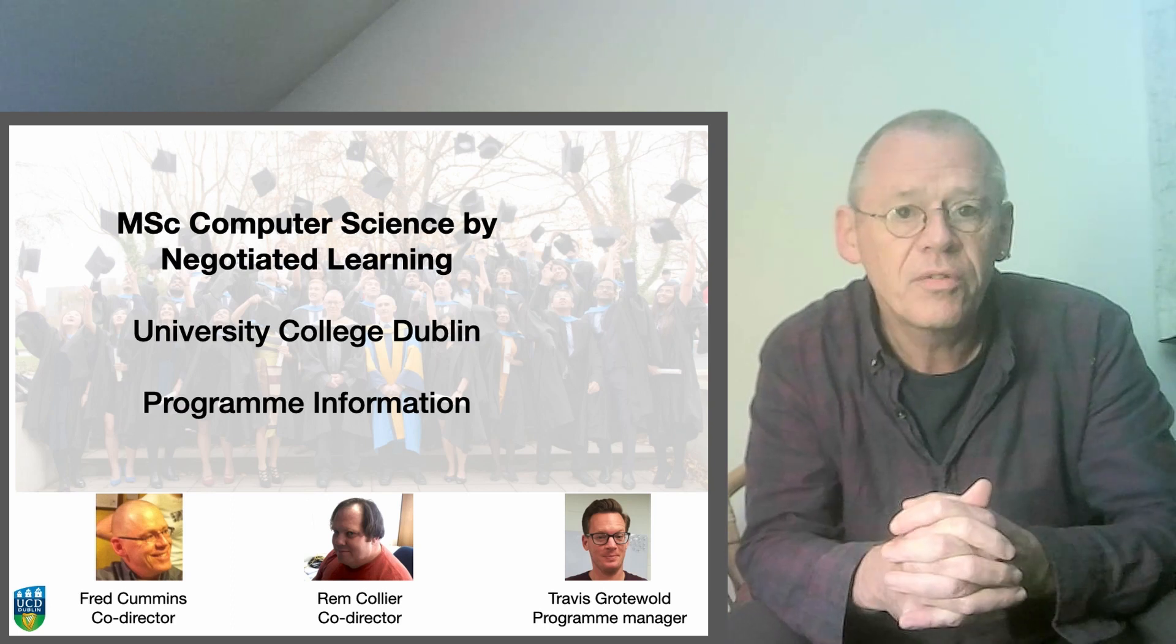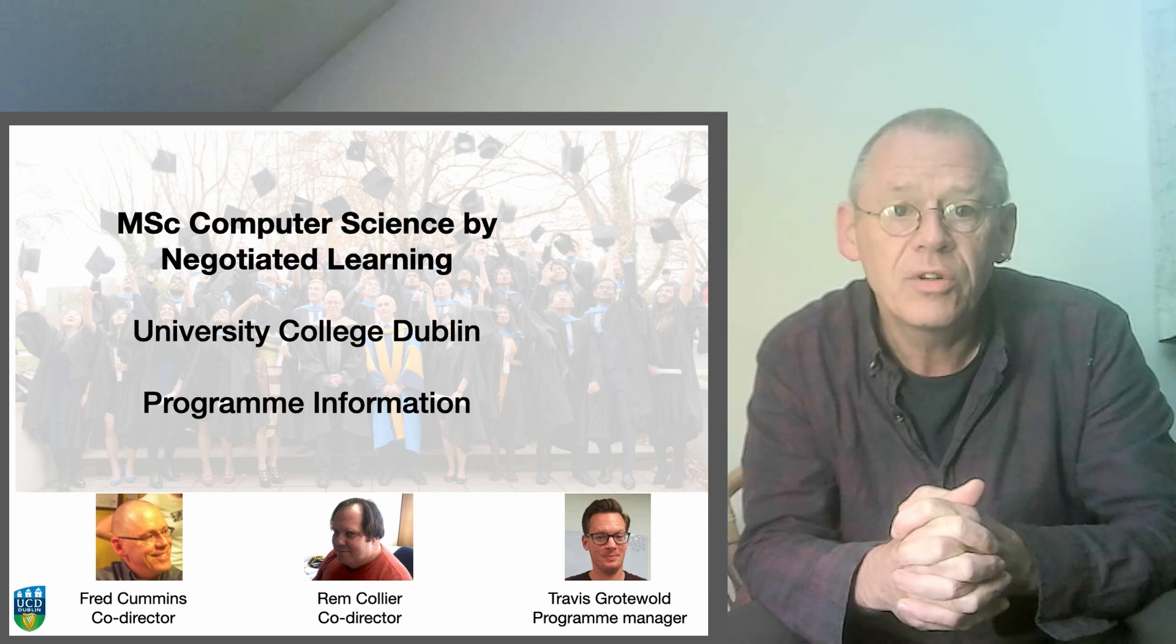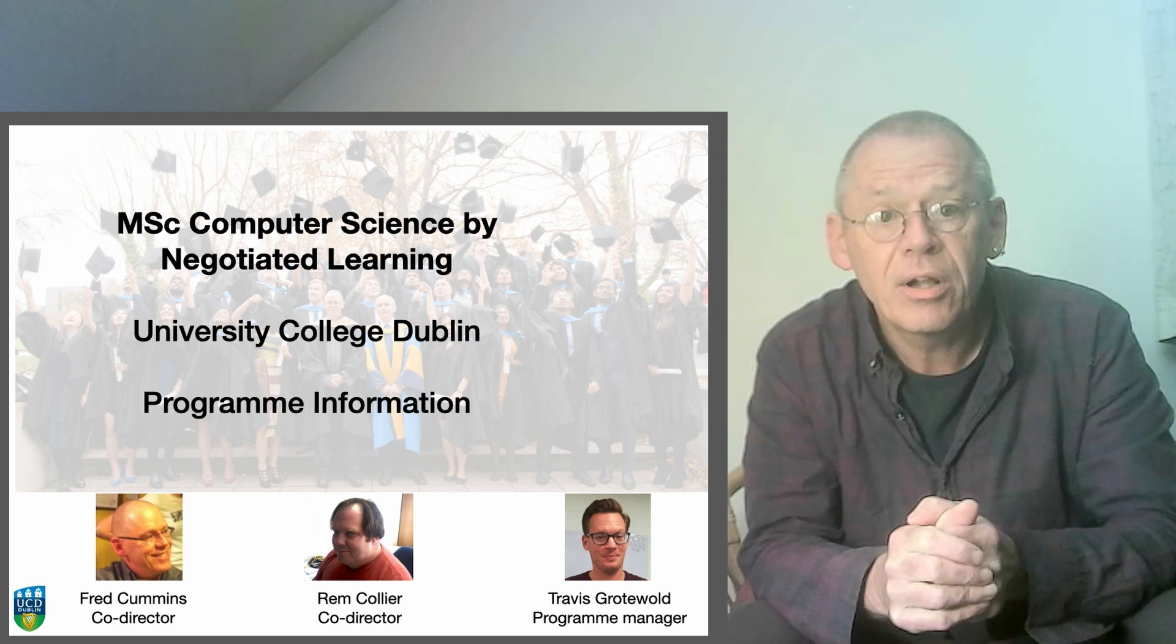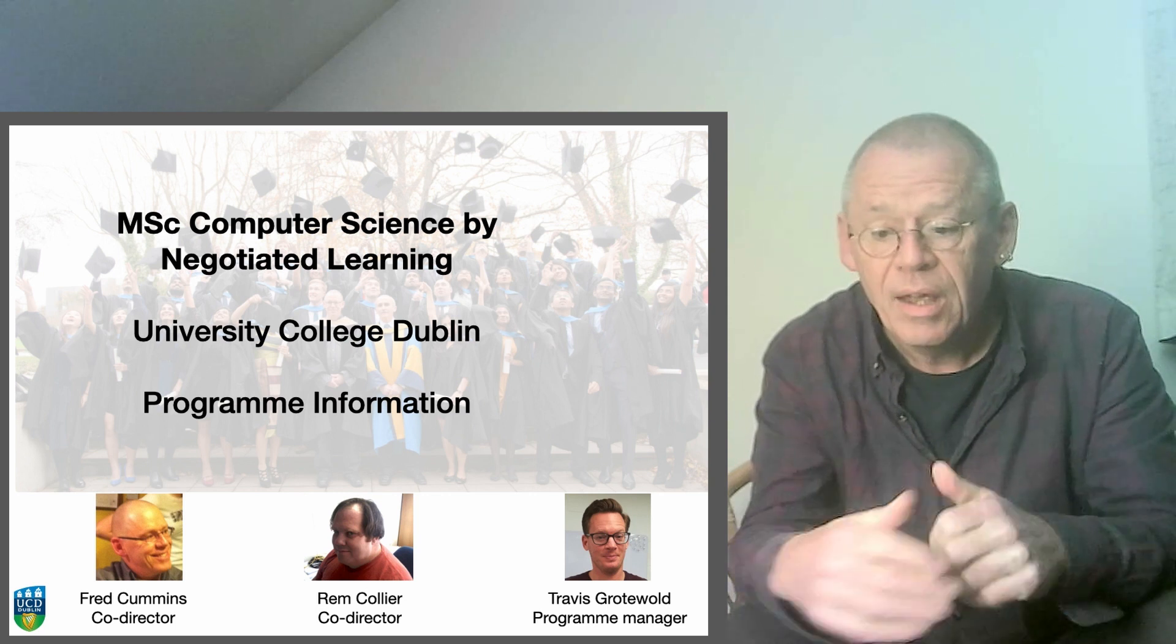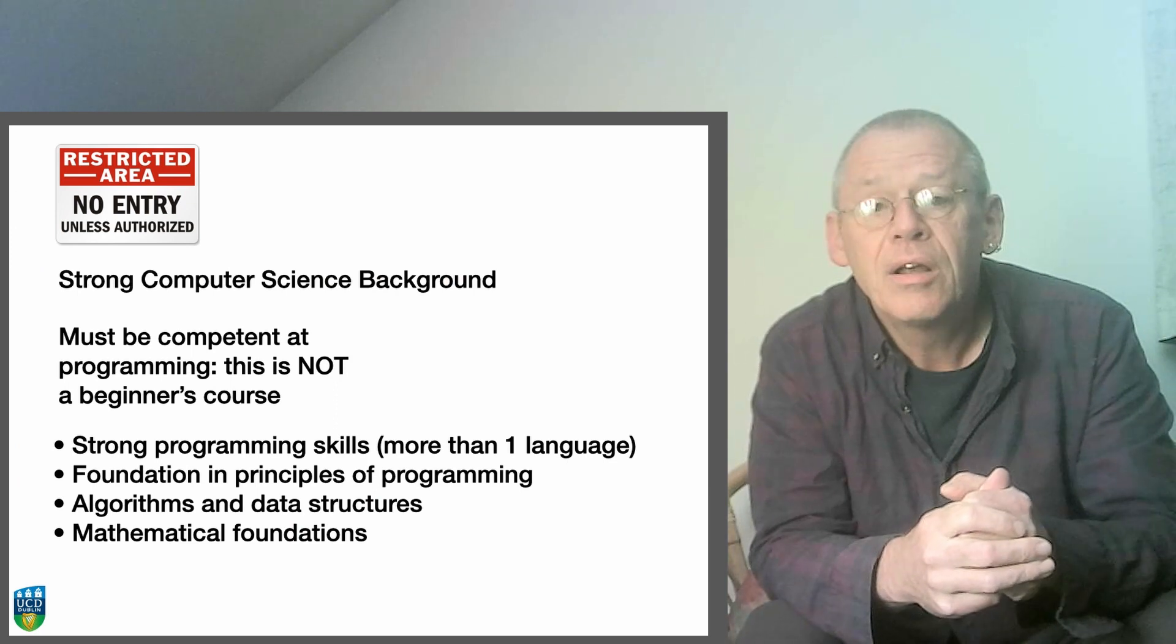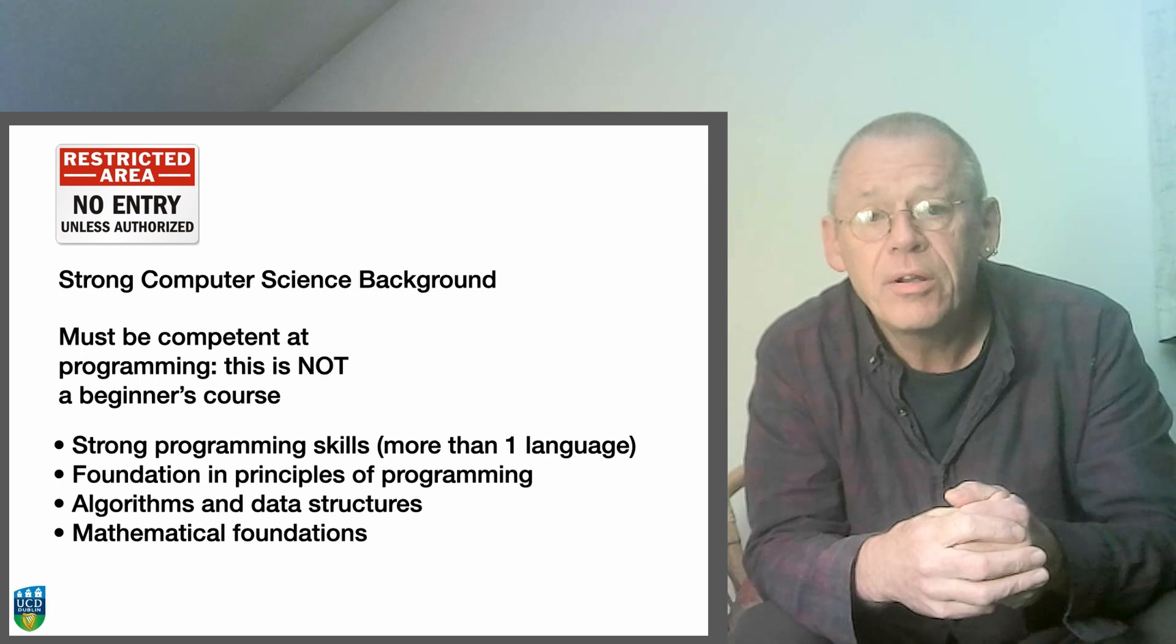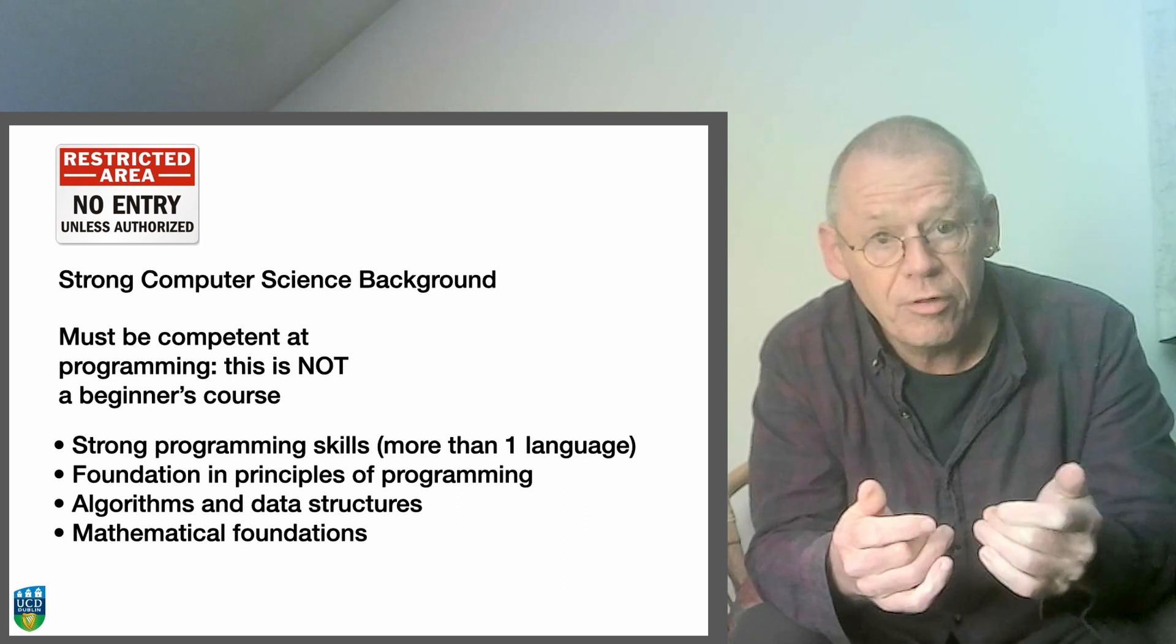Hello, I'm Fred Cummins, one of the directors of the MSc in Computer Science by Negotiated Learning. You can see there my co-director, Rem Collier, and our programme manager, Travis Grotevald. The MSc in Computer Science by Negotiated Learning is a unique degree offered by University College Dublin that can be completed in 12 months.